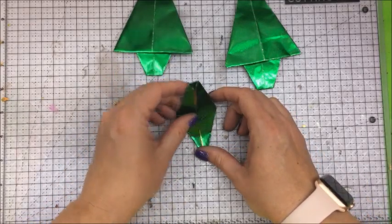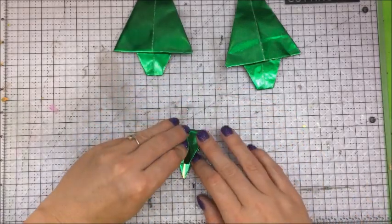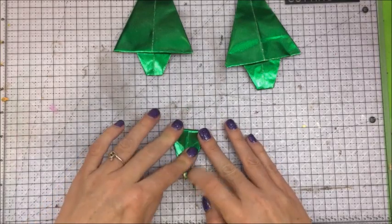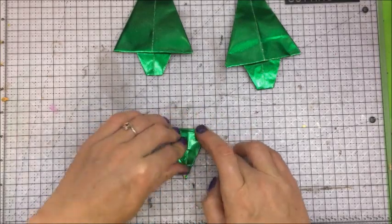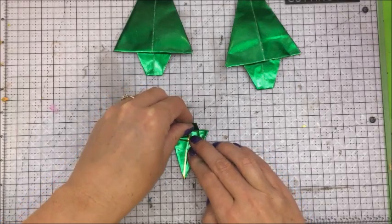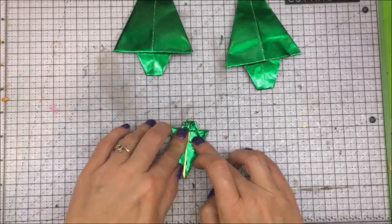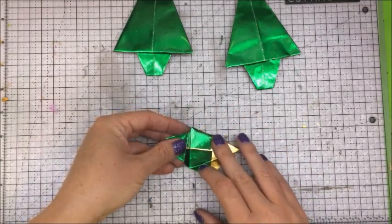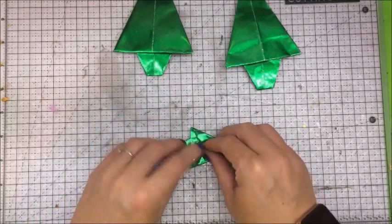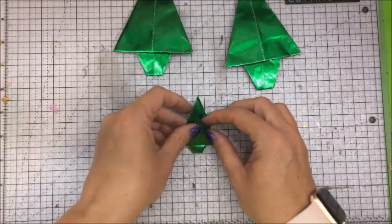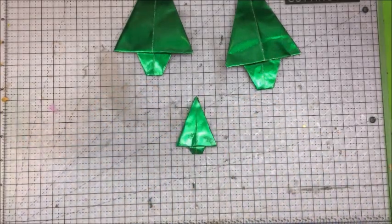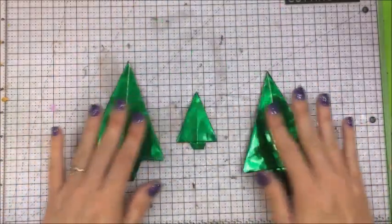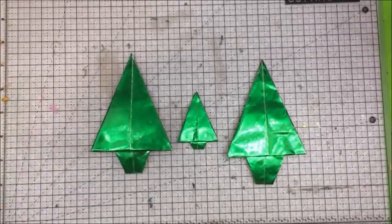Now we're going to fold this on down. We're going to fold this back. We're going to open up these two, we're going to tuck that in and flip it over. And now we have a cute little tree. How fun and easy is that?